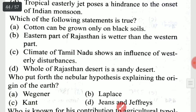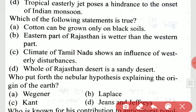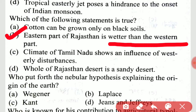Which of the following statements is true? It is option B: the eastern part of Rajasthan is wetter than the western part.